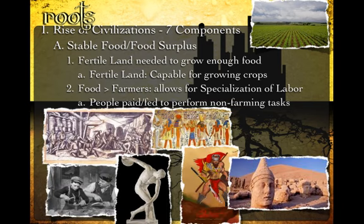Specialization of labor means people can be paid and fed to perform non-farming tasks. If you do anything other than farm or hunt and gather, you need to go thank a farmer. This is where people get paid to be artists, writers, stonemasons, builders, shoemakers, clothing makers, cooks, athletes, warriors, makers of great works of art, government leaders, and teachers — to be able to be here as students. All of that results from having more food than you have people to grow it.